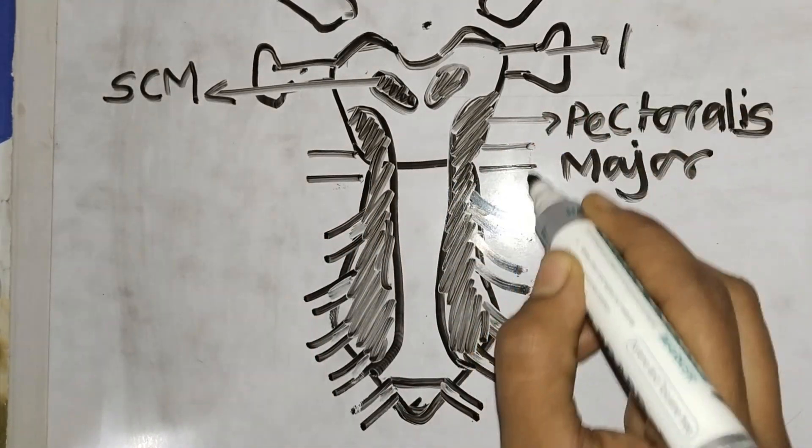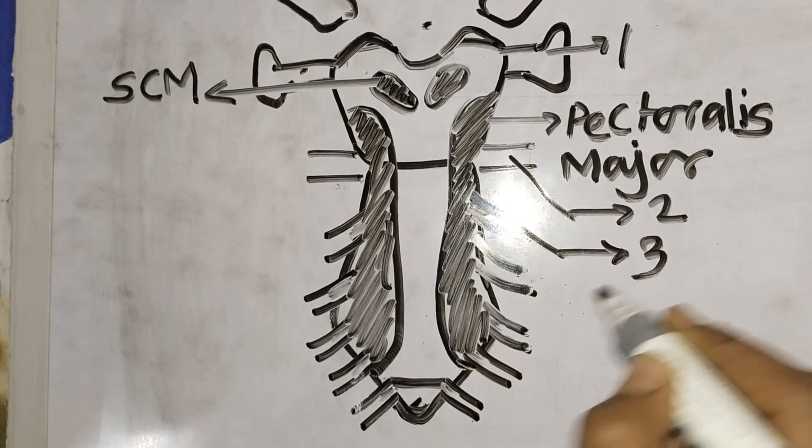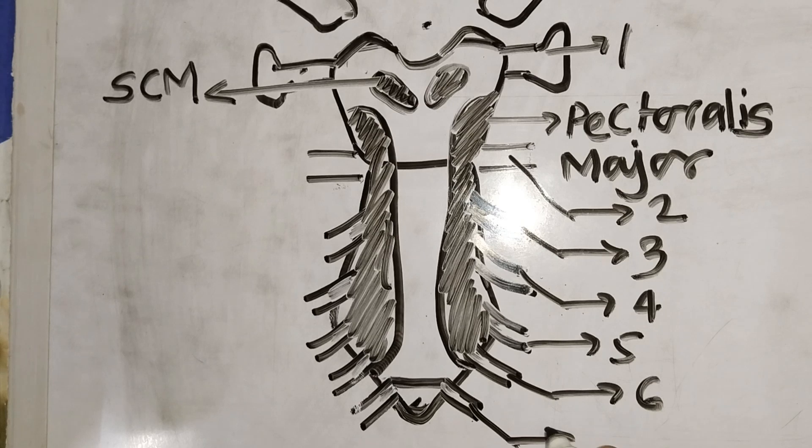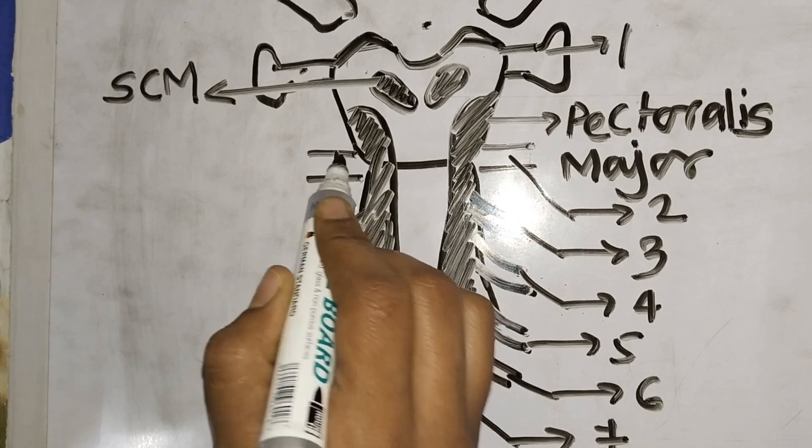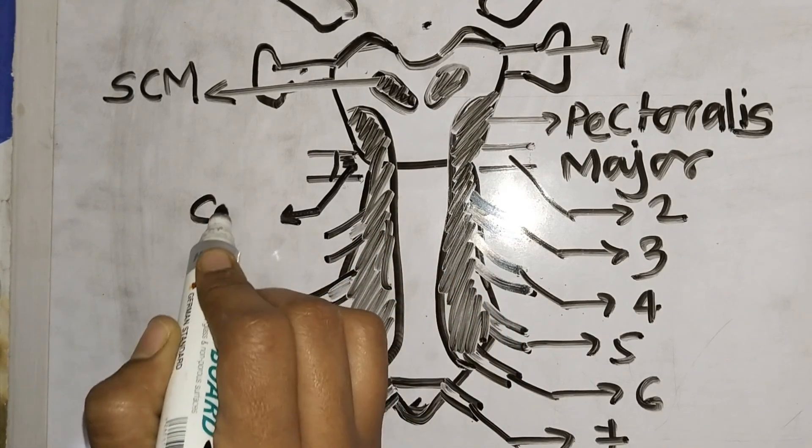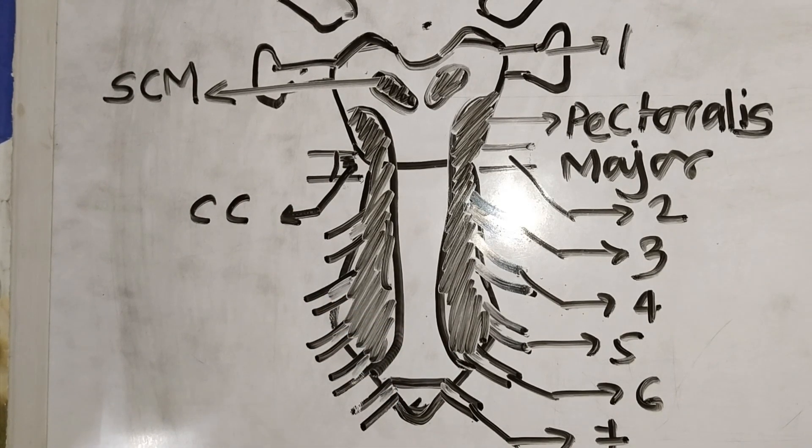Let's mark the rest of the facets of the ribs. This is the first, this will be marked as second, third, fourth, fifth, sixth, and this is the seventh rib.